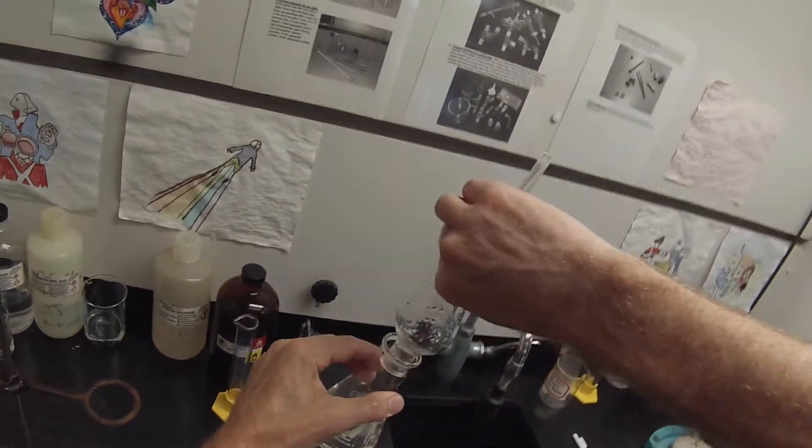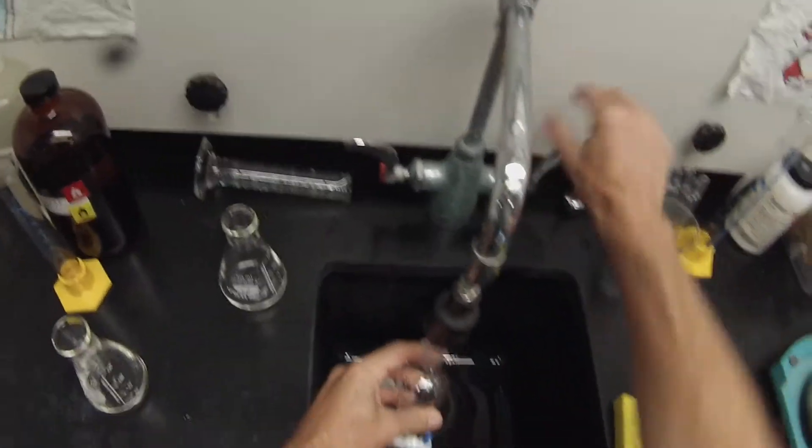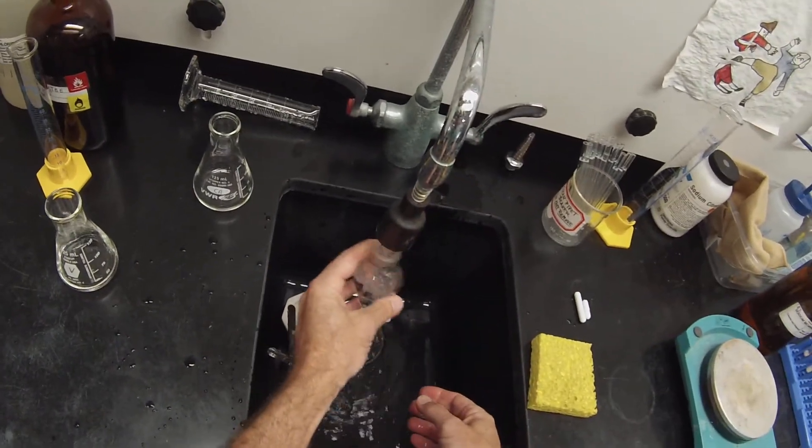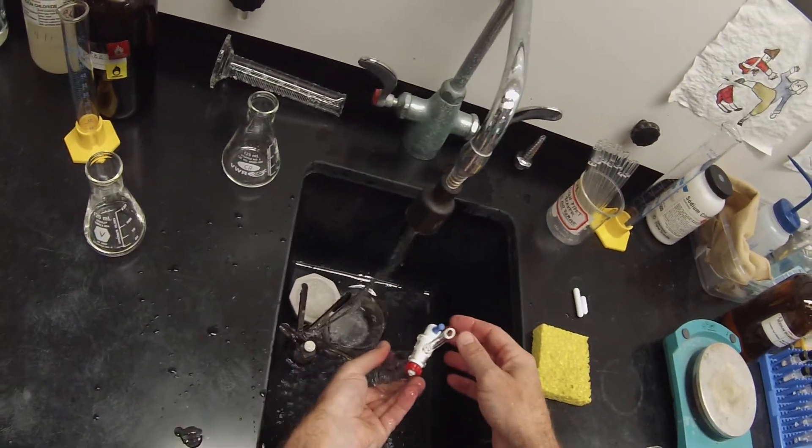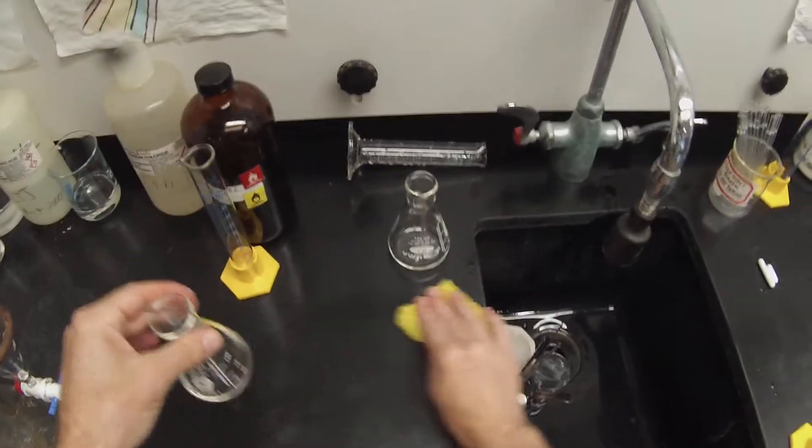The MTBE layer which we hope contains vanillin is going to be transferred to our V flask. I can rinse the separatory funnel because I'm going to use it again to extract the cinnamic acid once I've neutralized that solution. My sep funnel is at the ready. What I need now is the anhydrous sodium sulfate to dry that vanillin solution, to make sure that there's no water when I transfer that onto the rotavap. I forgot to get that out this morning.